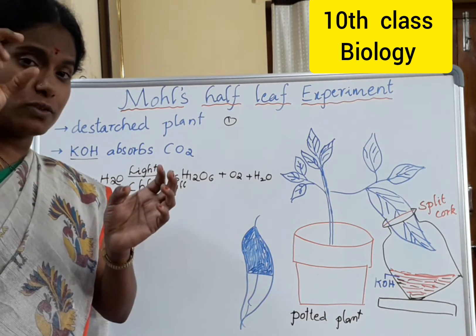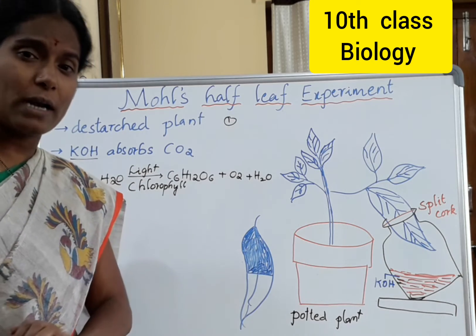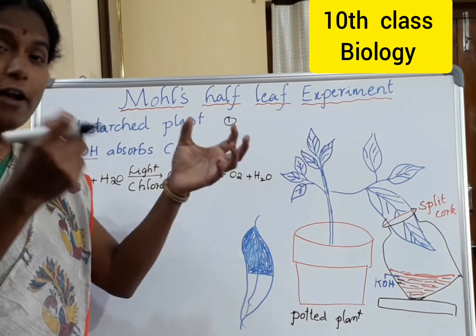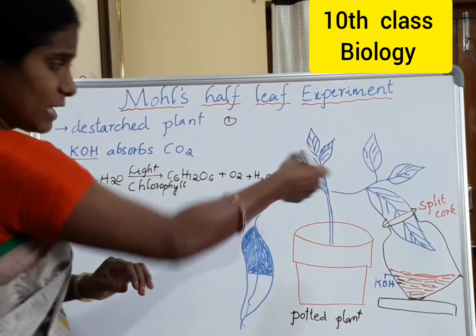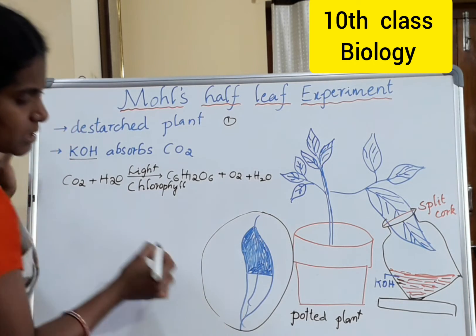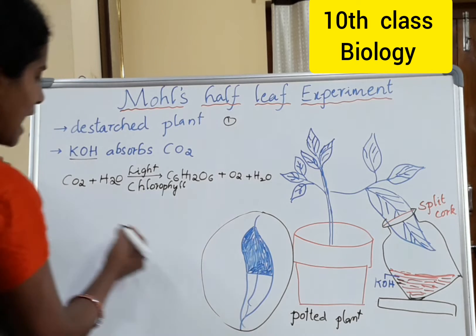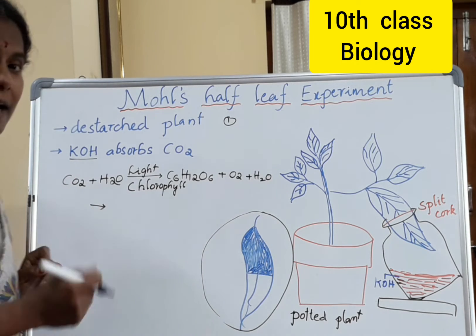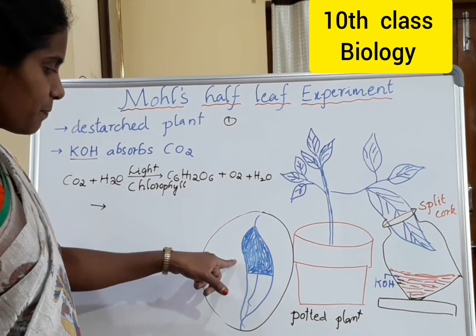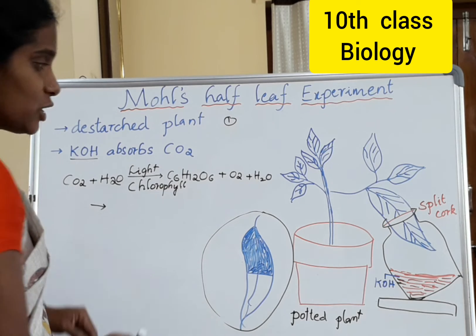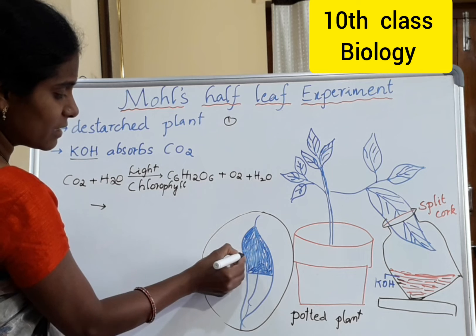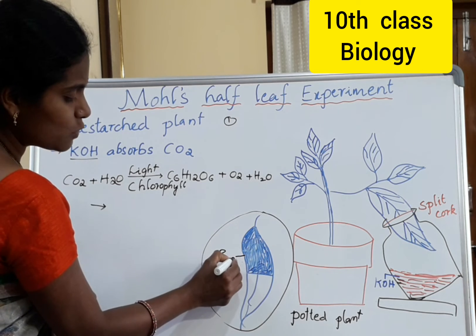We should boil the leaf — take it into a test tube and boil it over water first. Then boil it over methylated spirit. We should take out the leaf and spread it into the petri dish. Then we should add iodine solution or betadine solution to prove whether the leaf contains starch or not.